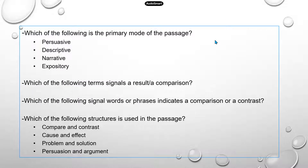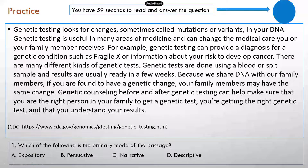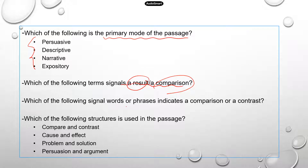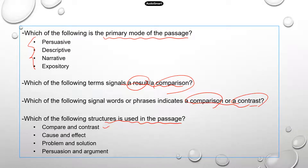These are the common types of questions you would see on TEAS for this topic. For instance: 'Which of the following is the primary mode of the passage?' with four different options. Or 'Which of the following terms signals a result or a comparison?' — if it's a result that's cause and effect, if it's a comparison that's compare and contrast. Or 'Which signal words or phrases indicate a comparison or a contrast?' And 'Which of the following structures is used in the passage?' — is it compare and contrast, cause and effect, problem and solution, or persuasion and argument?